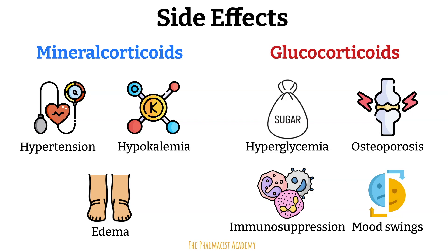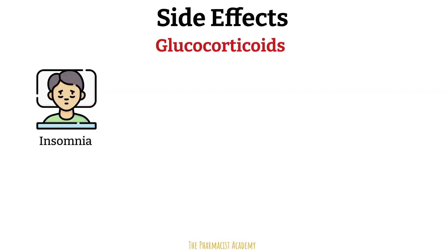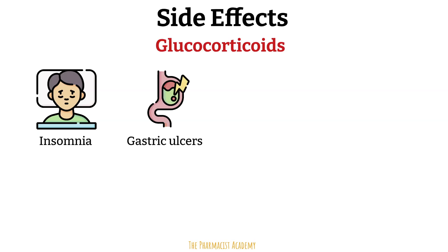Mood swings range from mild euphoria and anxiety to psychosis — mild symptoms are mostly seen with acute use. Insomnia can occur, especially when taken in moderate to high doses or late in the day, due to stimulatory effects on the central nervous system. Because glucocorticoids inhibit prostaglandins that protect the stomach, they can contribute to gastric ulcer formation. A proton pump inhibitor like omeprazole or an H2 blocker like ranitidine can be prescribed in high-risk patients. Cataracts and glaucoma due to alteration of aqueous humor and protein aggregation in the eye are also potential side effects.